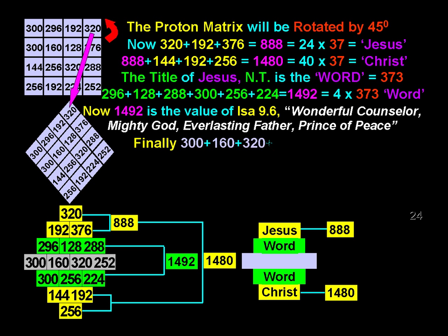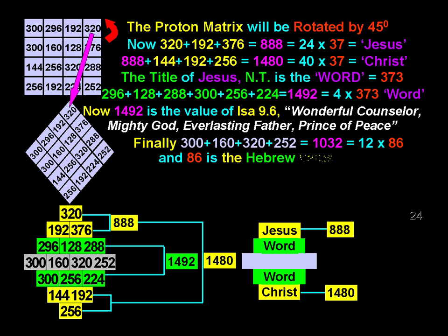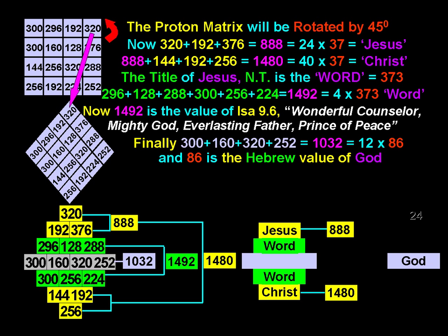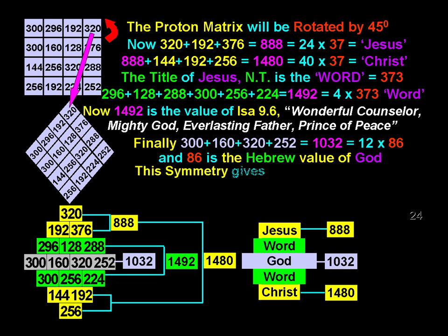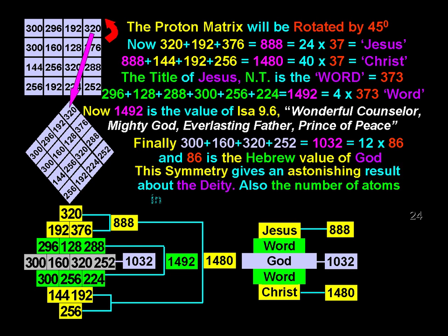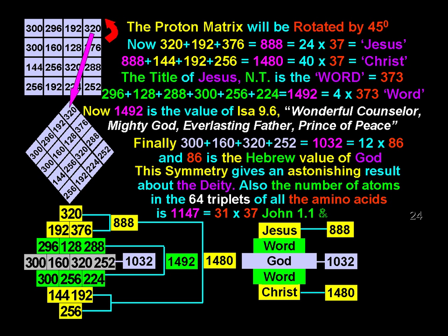Finally, 300 plus 160 plus 320 plus 252 is 1032, which is 12 by 86, and 86 is the Hebrew value of God. The symmetry gives an astonishing result about the Deity. Also, the number of atoms in the 64 triplets of all the amino acids is 1147, which is 31 by 37.